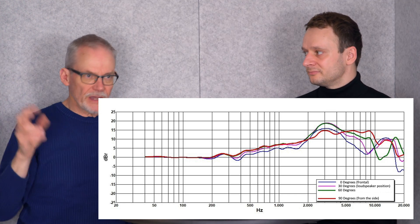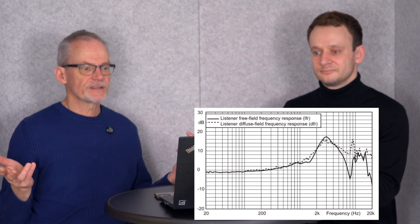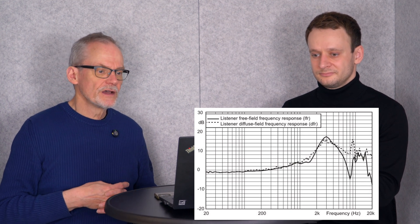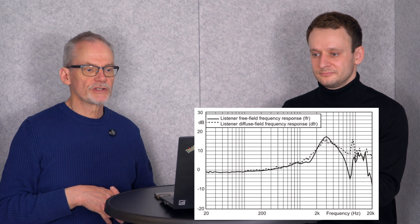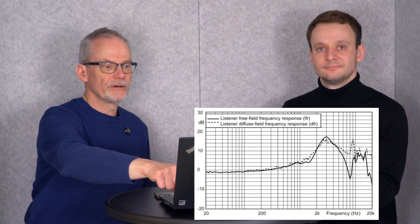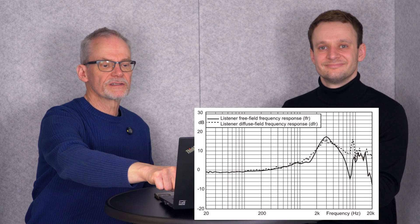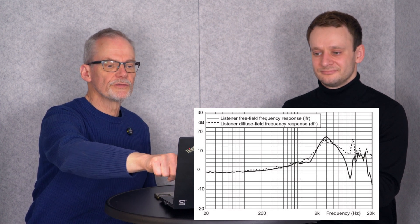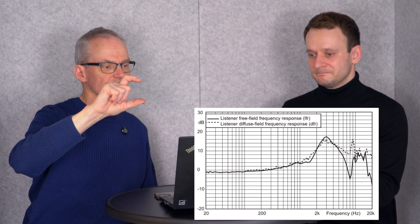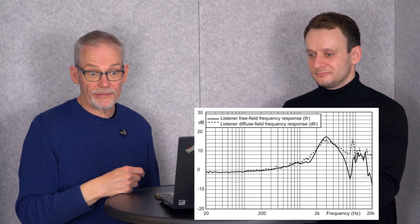All these transfer functions from all angles are summed up and the average is made. The resulting curve is the dashed curve you see here, and there are differences between the two. The biggest differences are in the high-frequency range. The main dip for the free field frequency response is at 8 kHz, and the highest peak for the diffuse field response is at 9 kHz. There is a difference of 14 or 15 dB between them — and that's a lot.